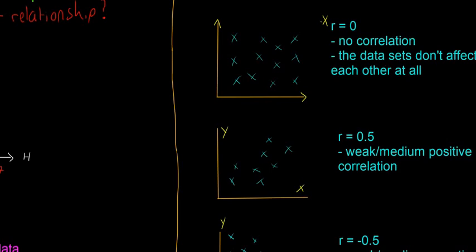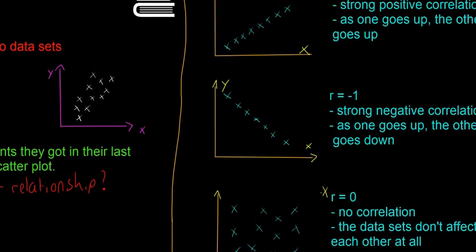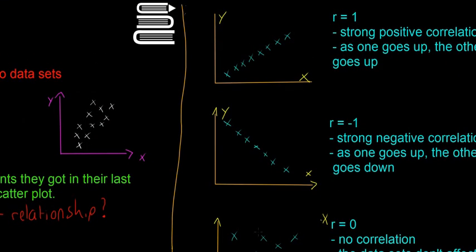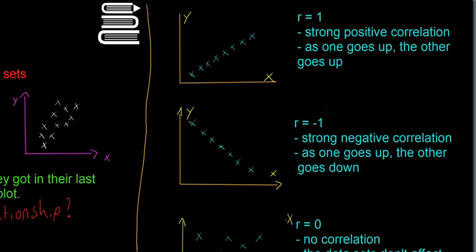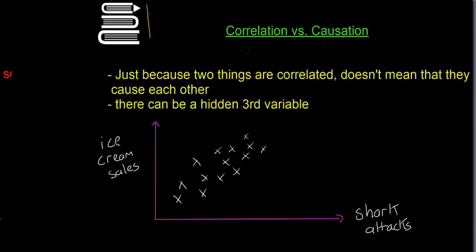The last thing to talk about with regards to correlation coefficient is the difference between correlation and causality, or correlation and causation. Just because two things are correlated doesn't mean that they cause each other. Sometimes there can be a hidden third variable.